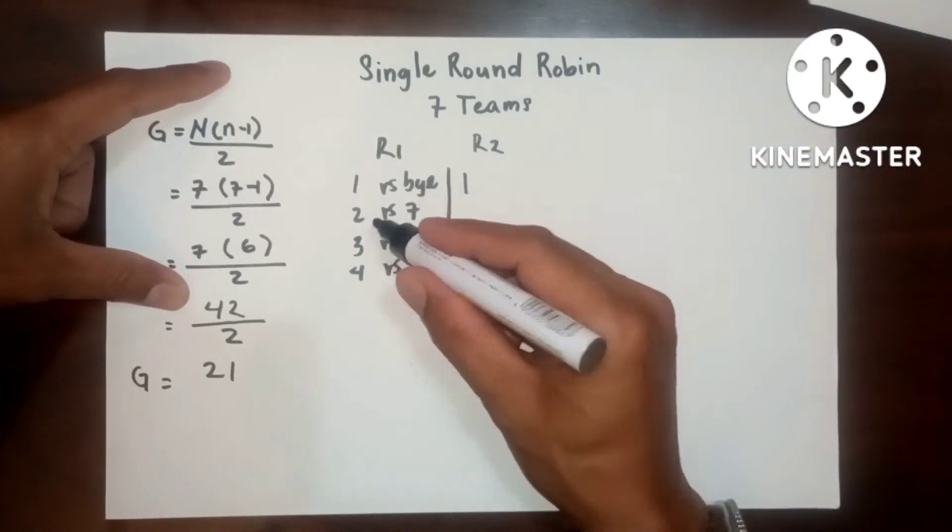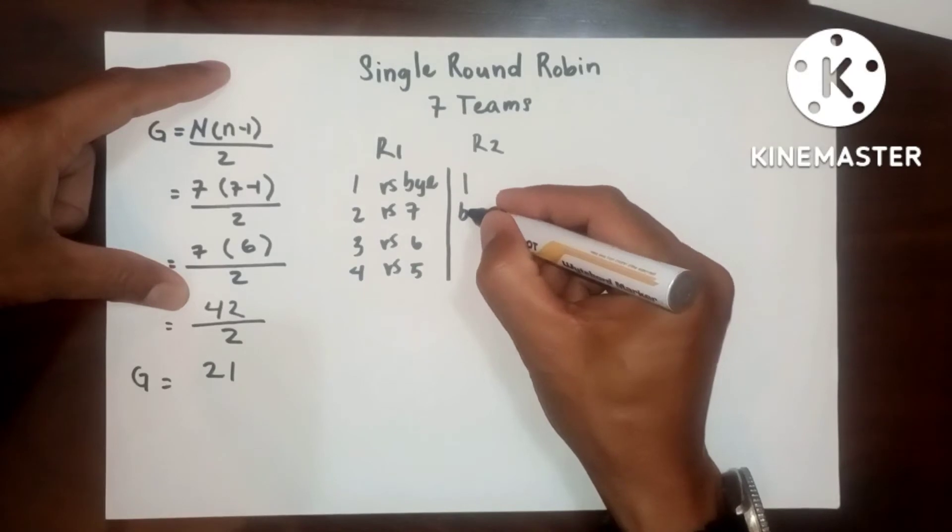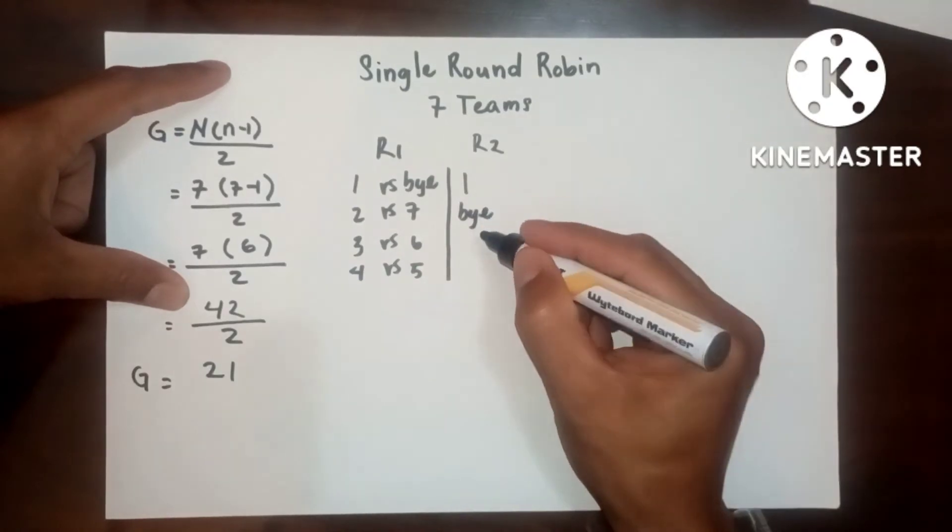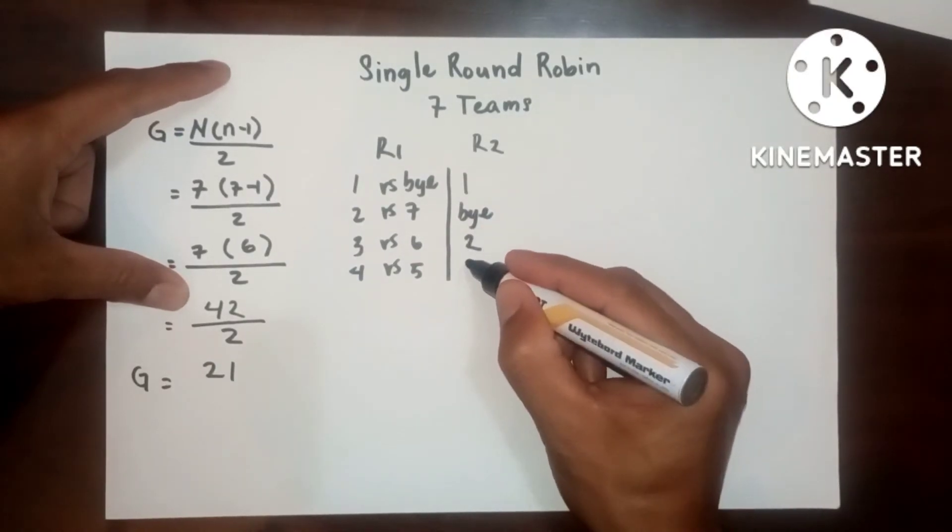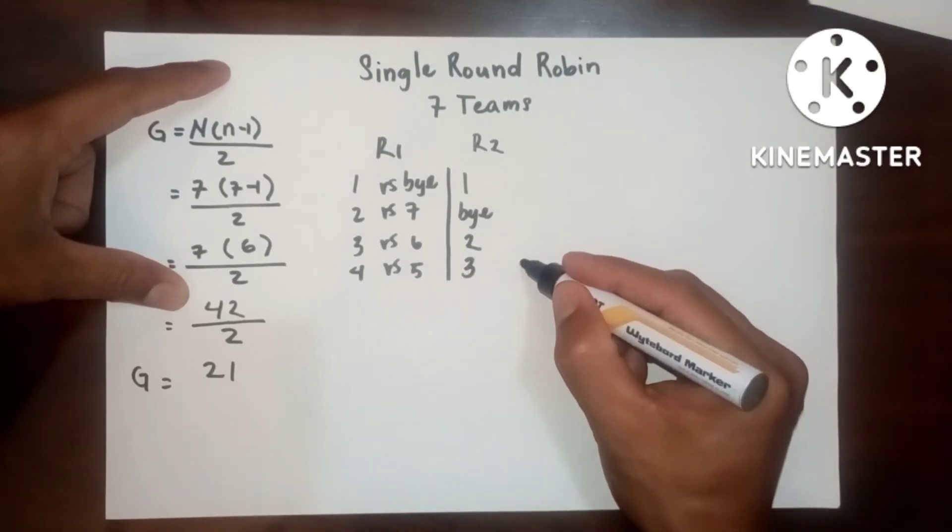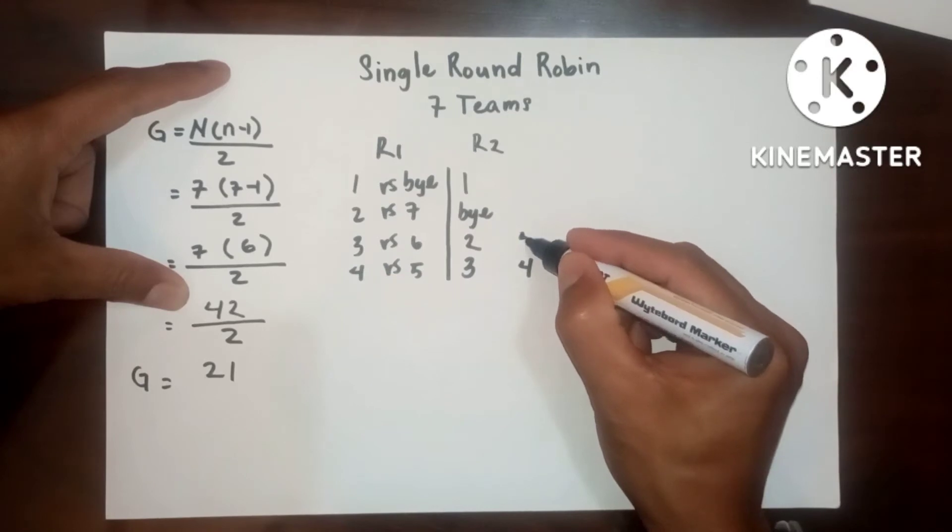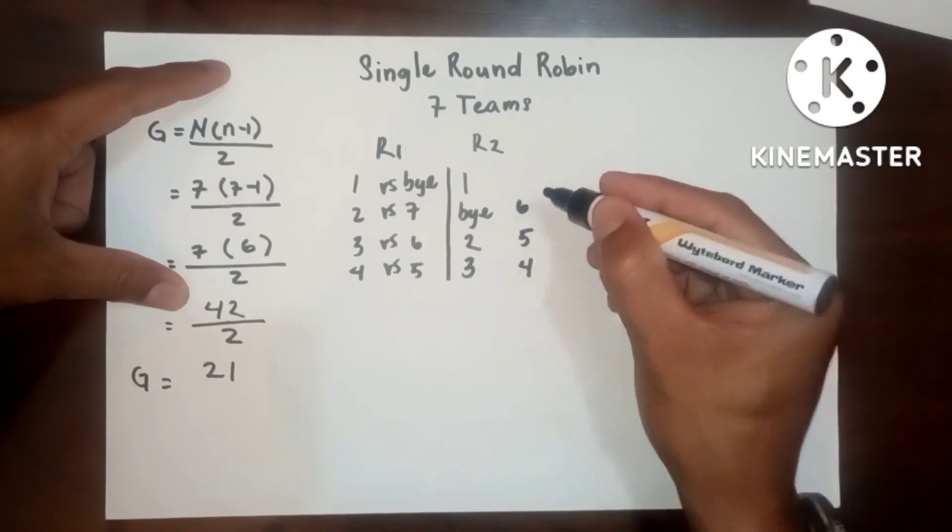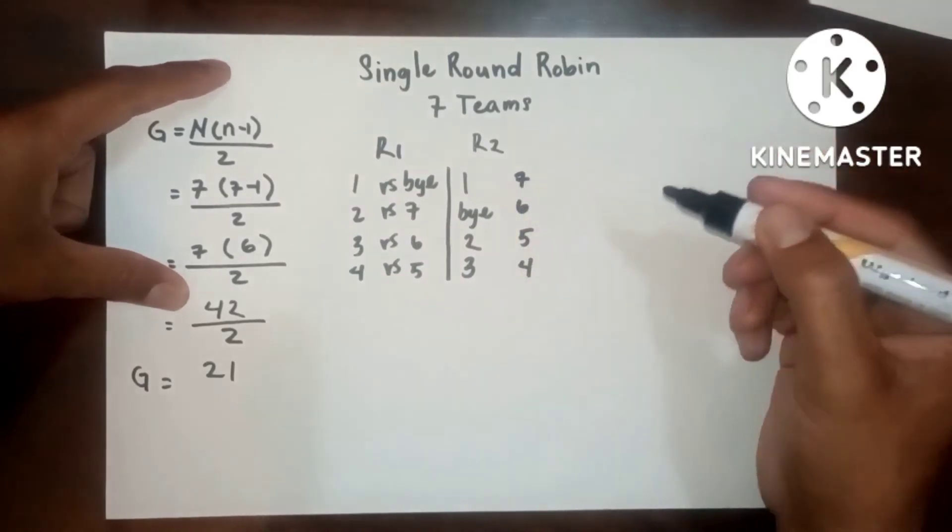The bye should be placed here. Then 2. Then 3. Then the 4 should be placed here. 4, 5, 6, and then 7.